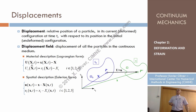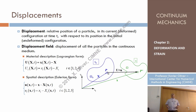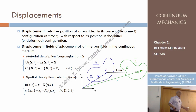Displacement — the vector displacement — is something that relates the relative position, not of two particles, but of the same particle with respect to its original position. So imagine we have particle P. At the reference configuration, it has a position denoted by the material coordinate vector, capital X.